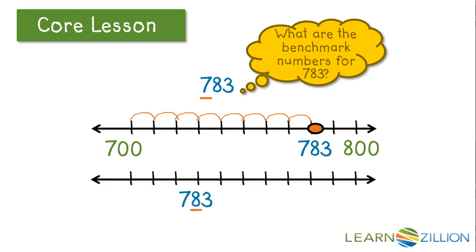If we focus on the 10's, or the 8 in 783, the benchmark numbers would be 780 to 790. And we would count by 1's—781, 782, 783.